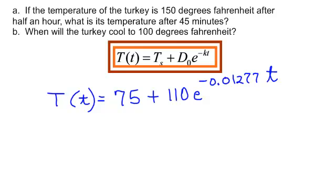Now I'm going to go back to my generic equation. Remember T_s, that's the temperature of my surroundings, which in this house it was 75 degrees, plus D_0. That is the difference in when my turkey came out of the oven. It was 185 degrees, minus the temperature of my house, 75 degrees. That is where that 110 came from. E to the negative point 01277. We had to work pretty hard to get that K, times t, which is our time.